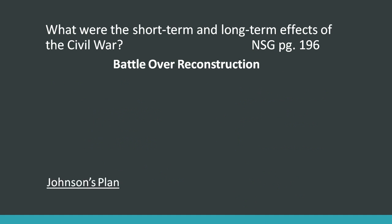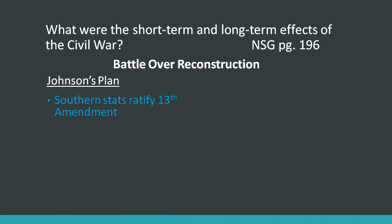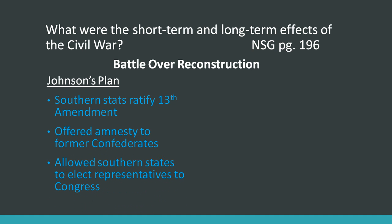In the battle over Reconstruction, after Lincoln was assassinated, Johnson came up with his own plan. He said that Southern states had to ratify the 13th Amendment, and he offered amnesty to former Confederates if they did so. He also allowed Southern states to elect representatives to Congress, meaning former Confederates could become part of Congress relatively quickly.